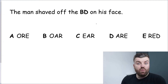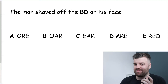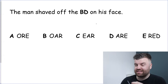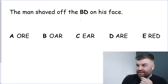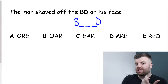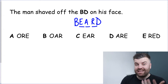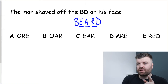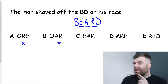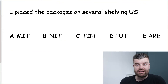The first way to solve this is to think about what word could make sense. What could a man shave off his face? It could only really be a beard or hair. With the letters BD, 'beard' looks like a match: B-E-A-R-D. The three letters taken out are E-A-R. Looking at the options, the answer is C — EAR.